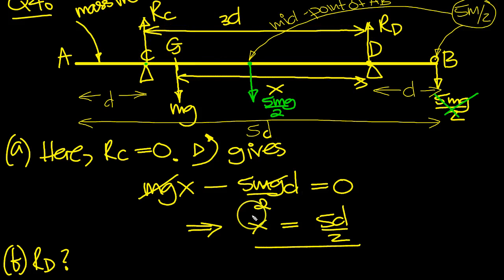which is 3D. So RD times 3D is the anticlockwise moment minus MG times this distance here. Now X was equal to 5D over 2 or 2.5D. So this is 3D, so this little gap will be the difference, so it's D over 2.